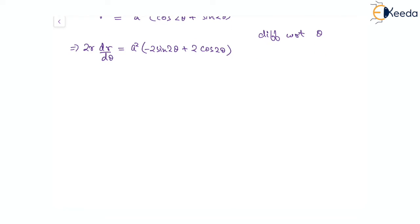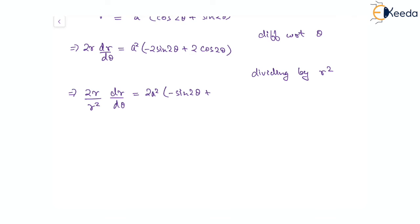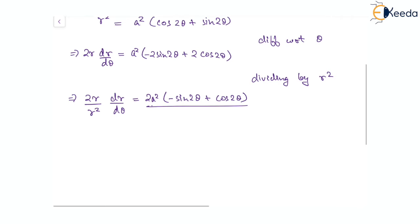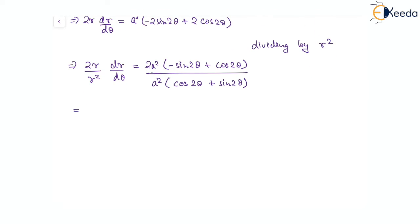Now let us divide this equation by r². On the left side we get 2r/r² · (dr/dθ). Taking 2 common from the numerator on the right: 2a²(−sin2θ + cos2θ). Now substituting r² = a²(cos2θ + sin2θ) on the right side and cancelling common factors, we get (1/r)(dr/dθ) = (−sin2θ + cos2θ)/(cos2θ + sin2θ).